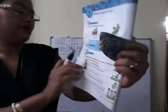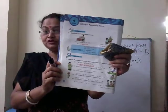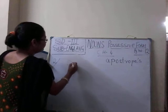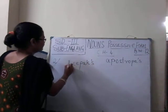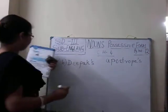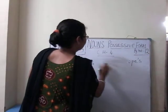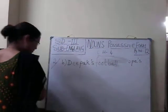Now read sentence B: 'Rohan is playing with Deepak's ball.' When we have to show the ownership of something, we add apostrophe S. In sentence B, apostrophe S is not used, so you rewrite it: 'Rohan is playing with Deepak's football.' D-E-E-P-A-K, then apostrophe S. Whose football is this? Deepak's football. This is Deepak's football.